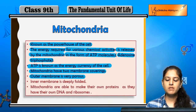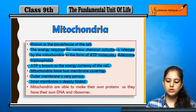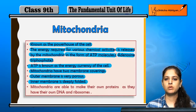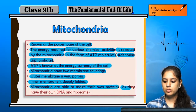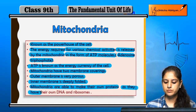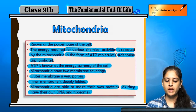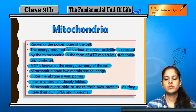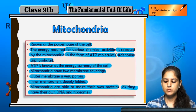Jo bahar wali outer membrane hai, woh porous hoti hai — bahut saare pores hote hain usmein. Aur jo inner membrane hai, usmein bahut saari foldings hoti hain. So mitochondria are able to make their own proteins, as they have their own DNA and ribosomes. Mitochondria apne proteins khud synthesize kar sakte hain.